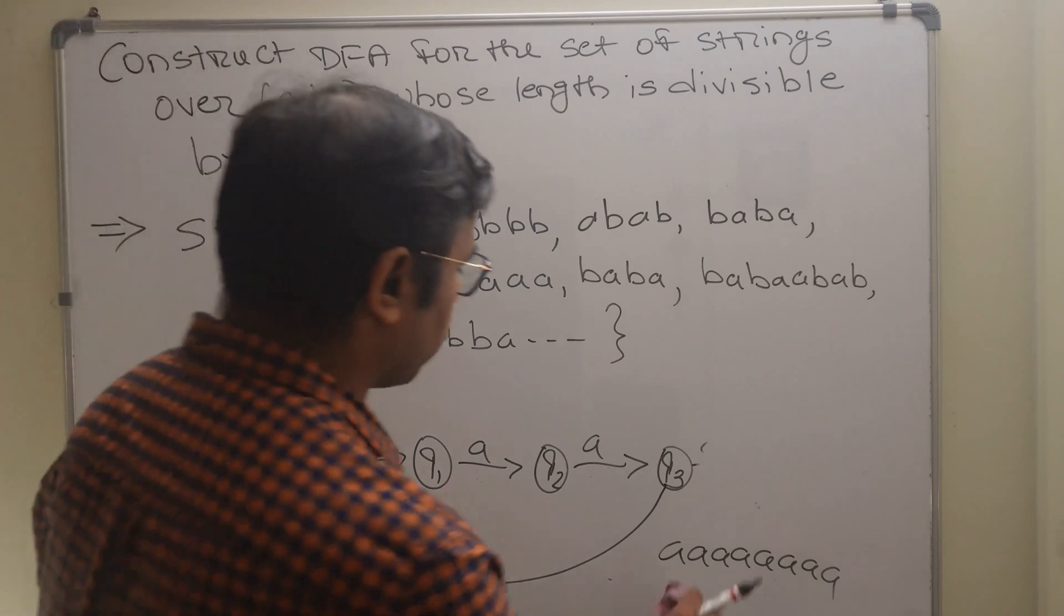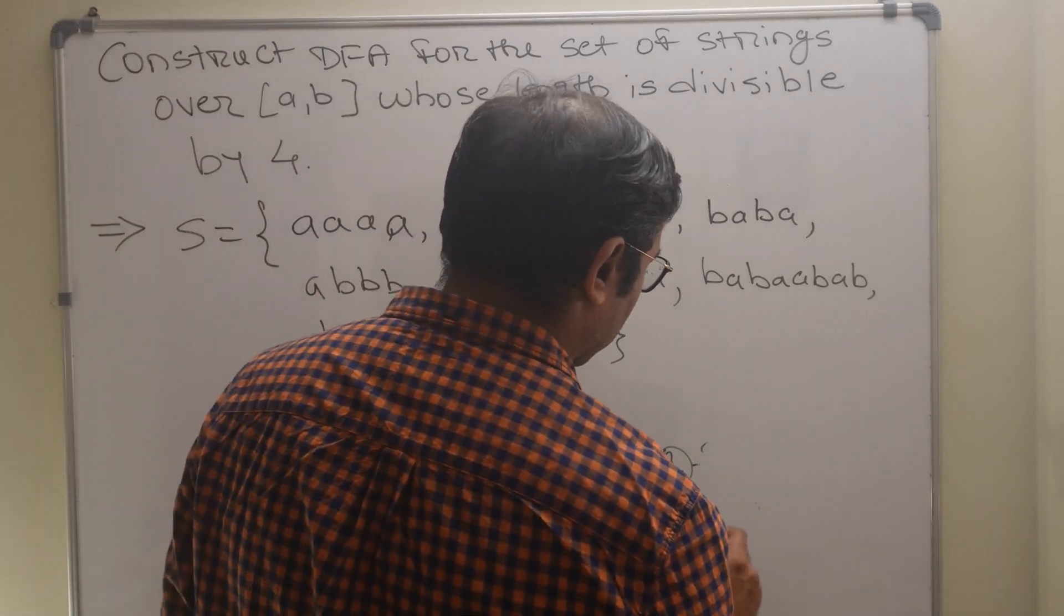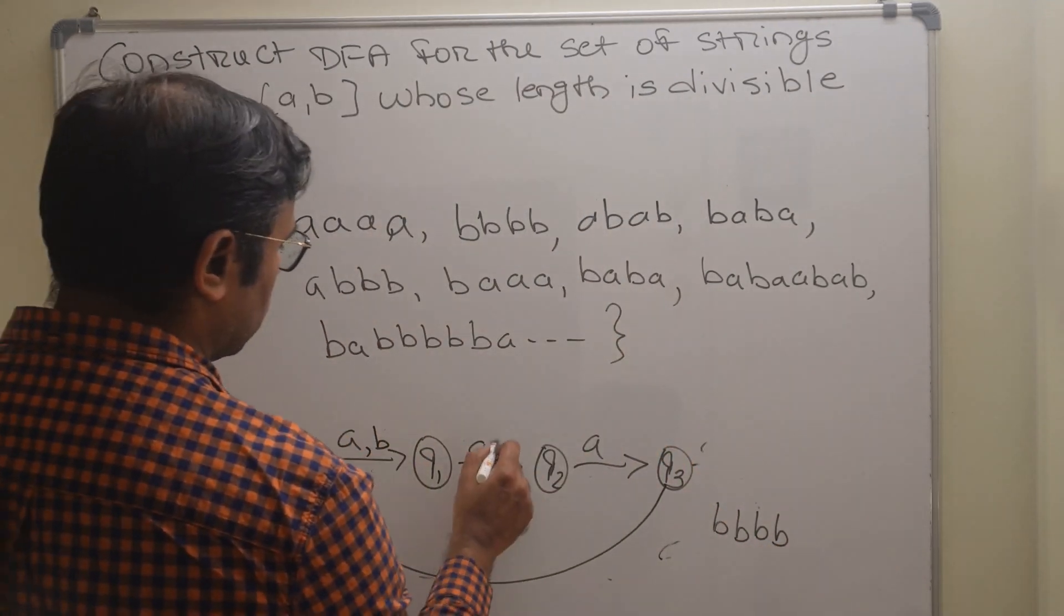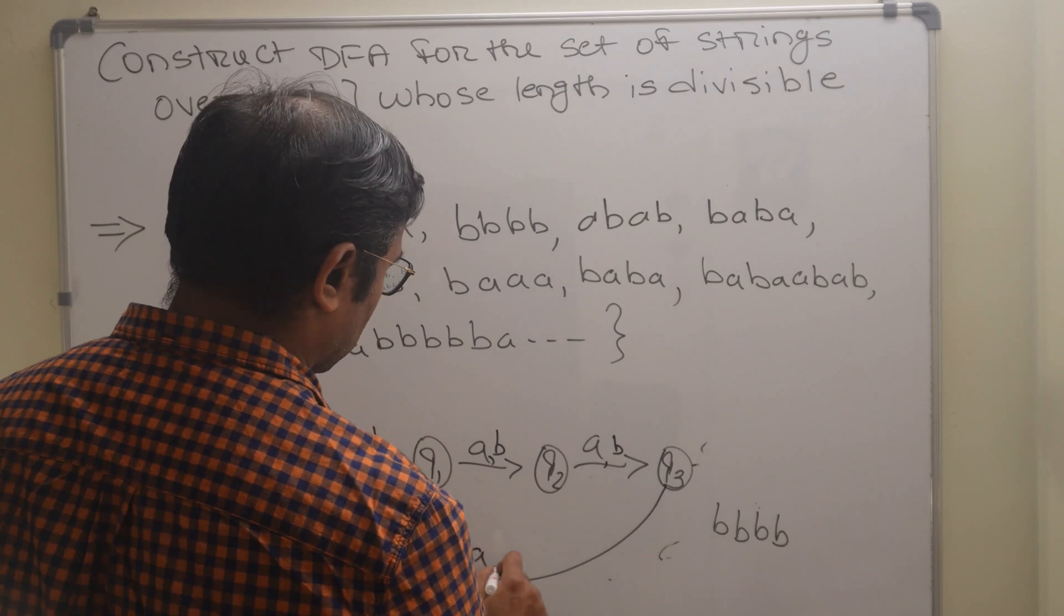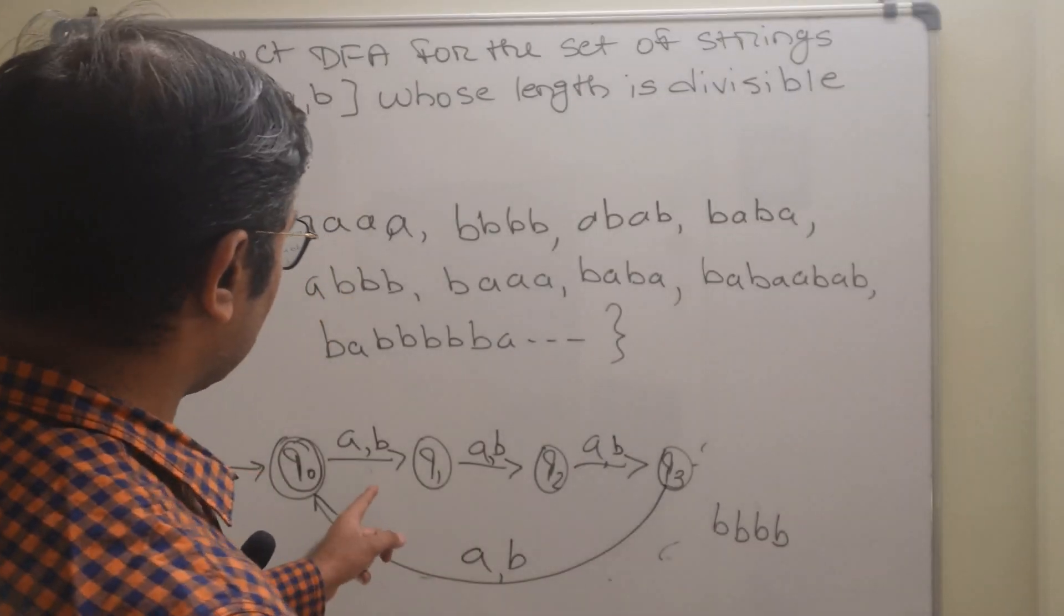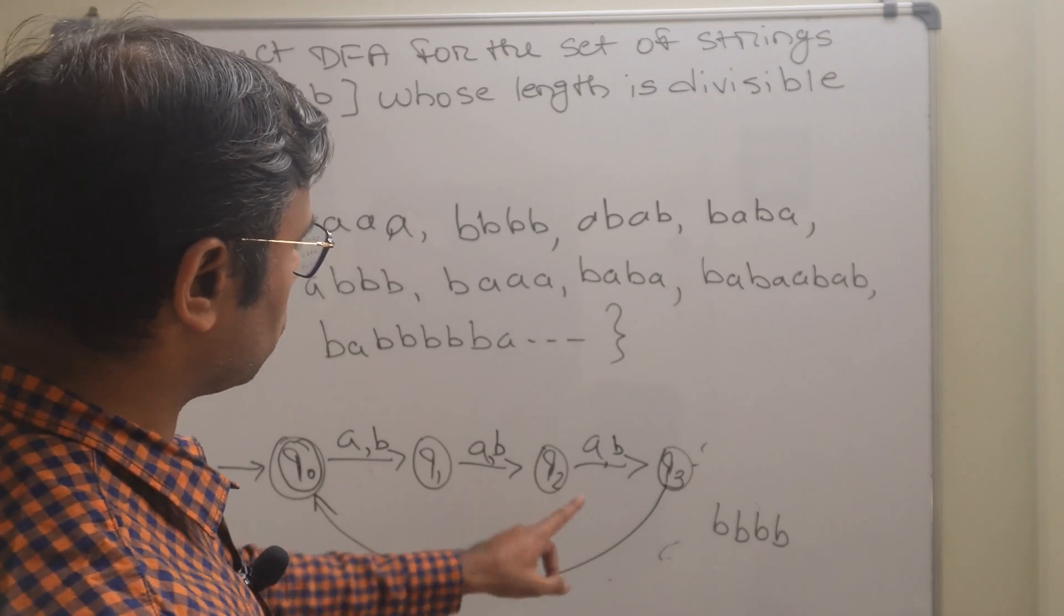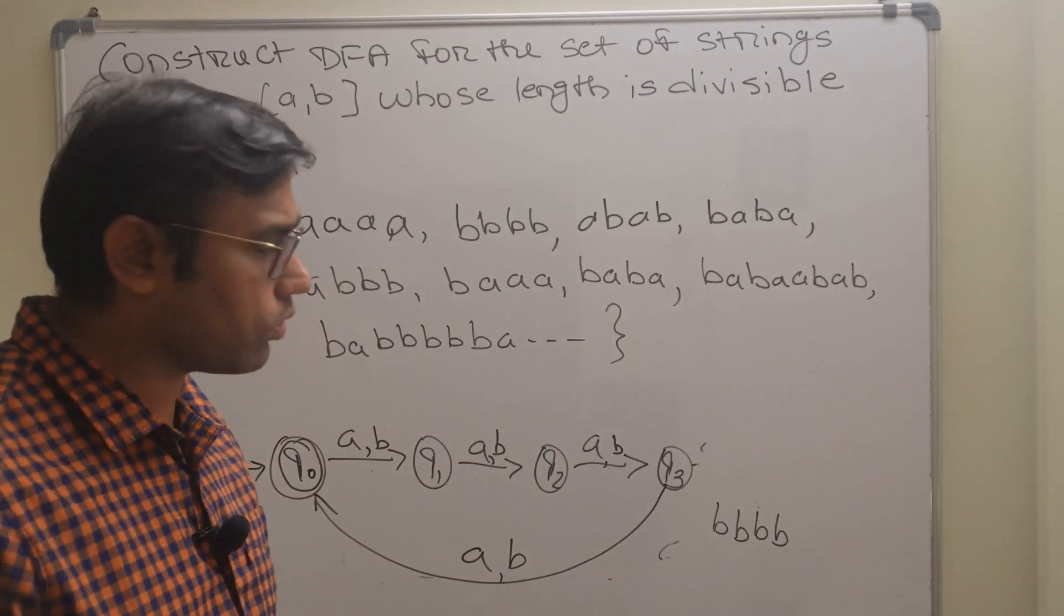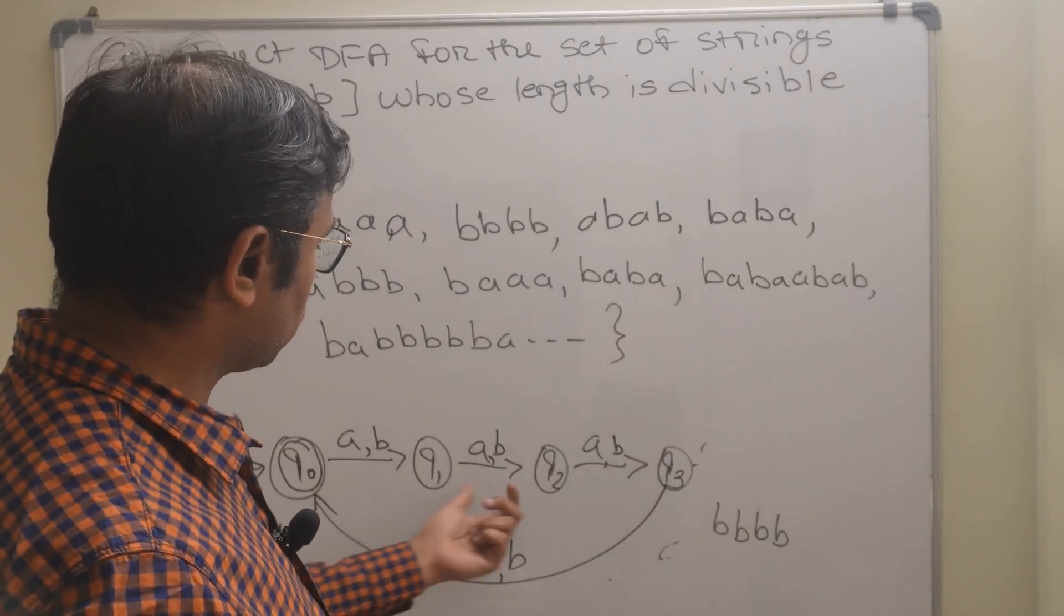So next is four times b. If you take four times b then we can write here b, b, b, b so that it can accept multiples of four. One, two, three, four, one, two, three, four. String should be divisible by four means it is multiple of four.